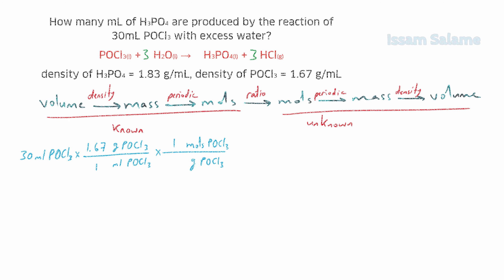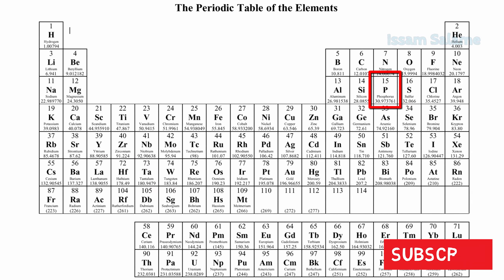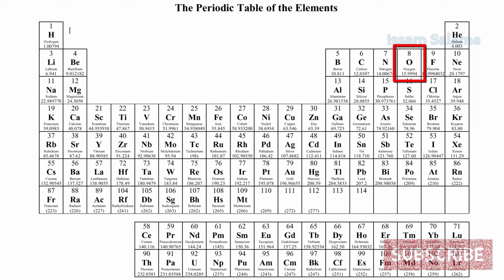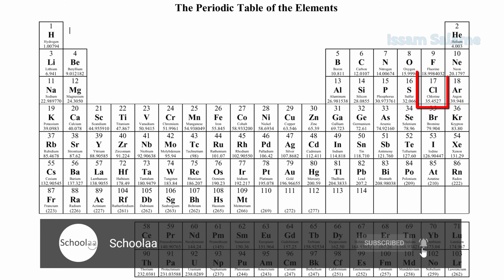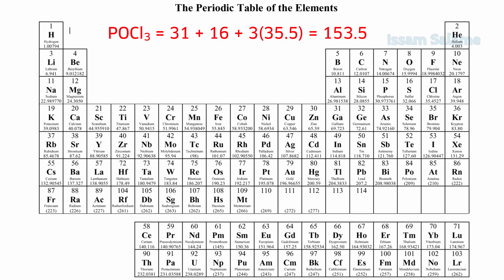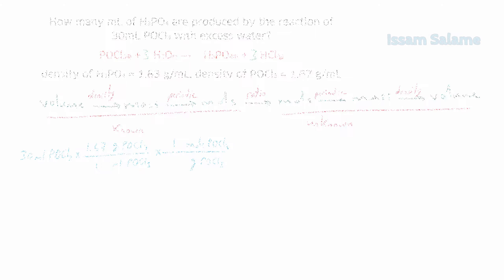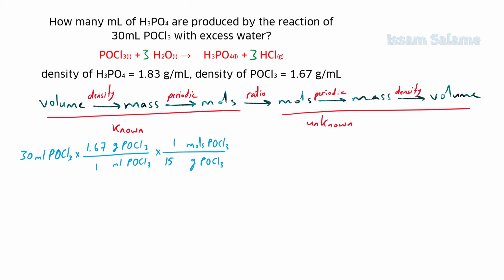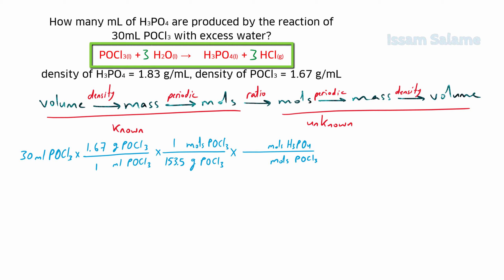We put 1 next to moles and get the molar mass of POCl3 from the periodic table: phosphorus is 31, oxygen is 16, and chlorine is 35.5, giving a total molar mass of 153.5 g/mol. Then we multiply by another fraction to convert moles of POCl3 to moles of H3PO4, placing moles of POCl3 in the denominator and moles of H3PO4 in the numerator. From the balanced equation, the coefficient is 1 for both POCl3 and H3PO4.